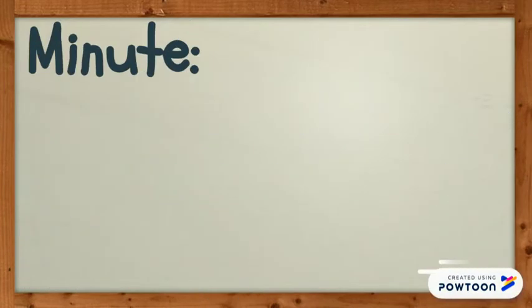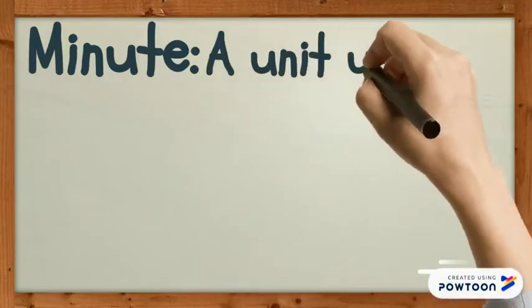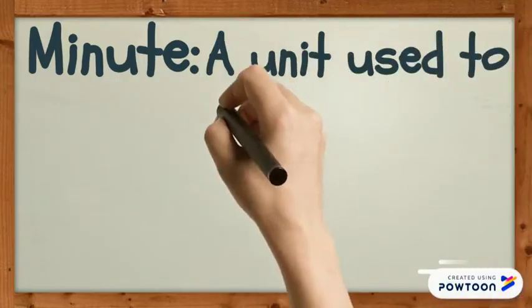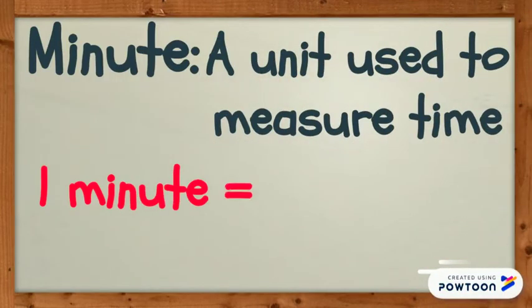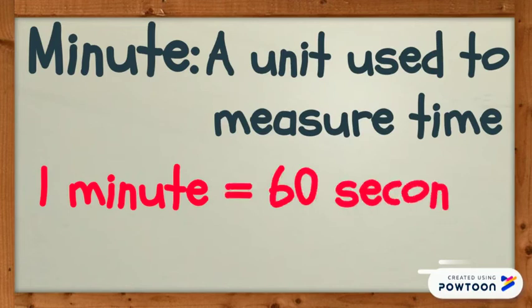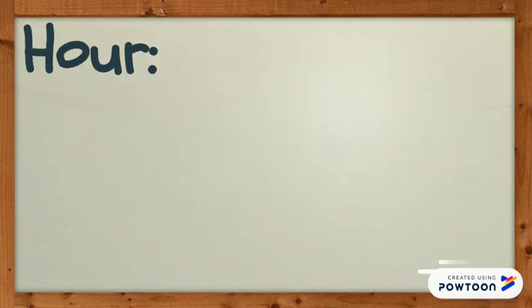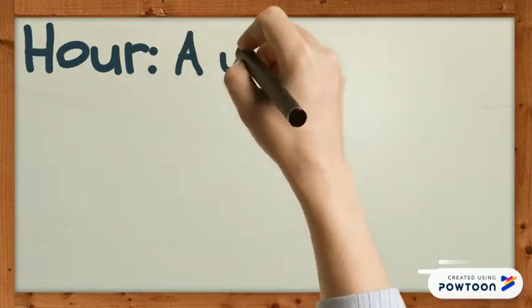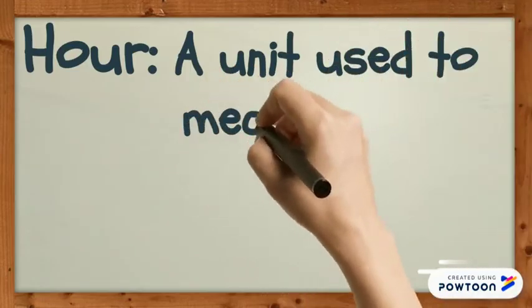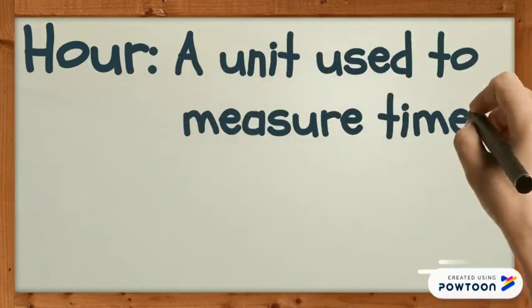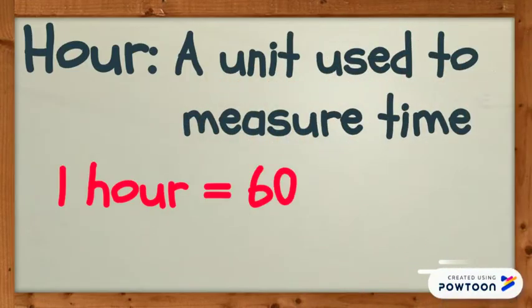A minute is a unit used to measure time. One minute equals 60 seconds. An hour is another unit used to measure time. One hour equals 60 minutes.